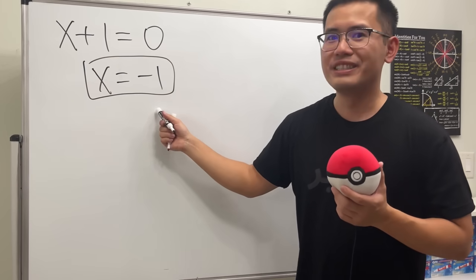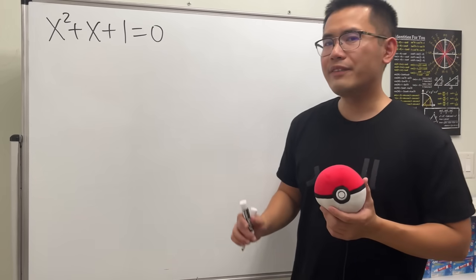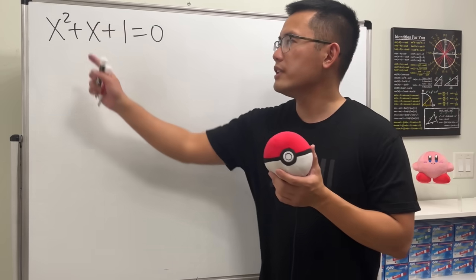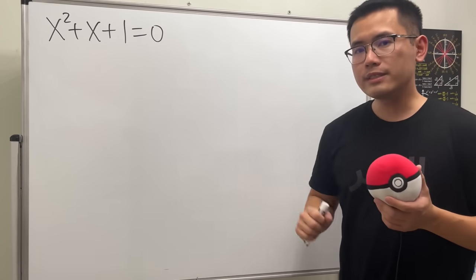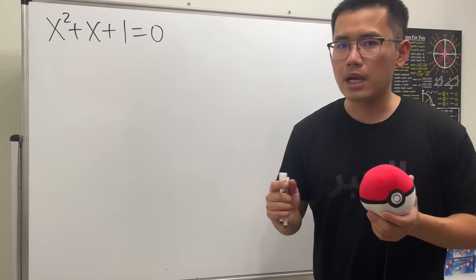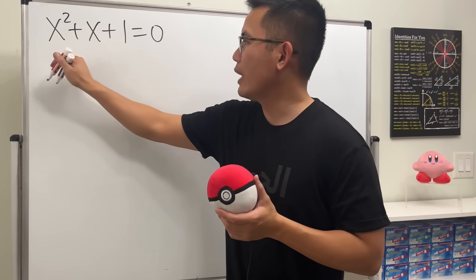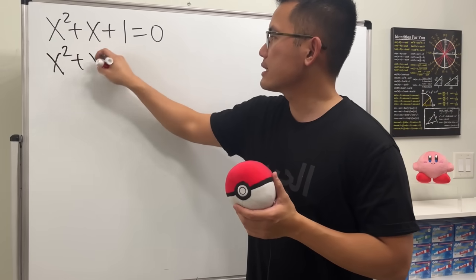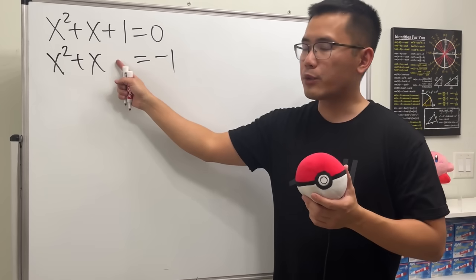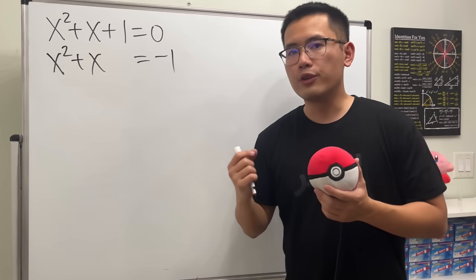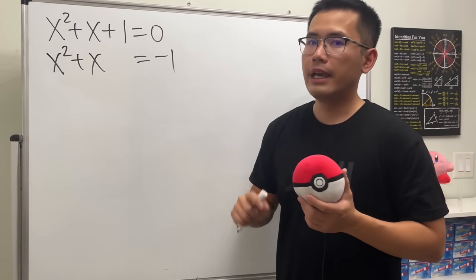Level two: now we have a quadratic equation x squared plus x plus one is equal to zero. Let's go ahead and solve this by completing the square. First, move the one to the other side so we have x squared plus x equal to negative one.